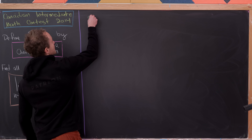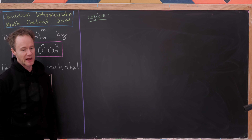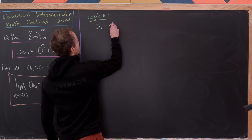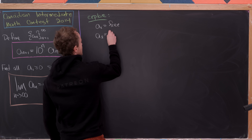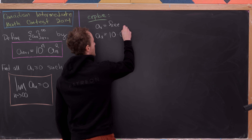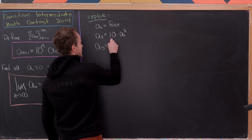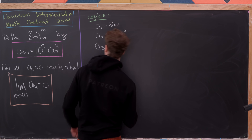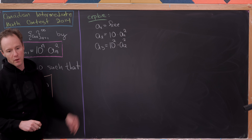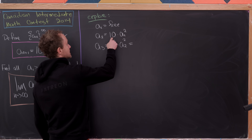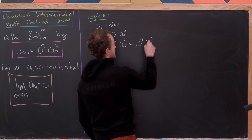We're going to start with some exploration to see if we can get a formula for a_n in terms of n and a_1. At the moment a_1 is free to be anything. Then a_2 = 10^1 · a_1². Now looking at a_3: that's 10² times a_2², and putting that together we get 10^4 · a_1^4.